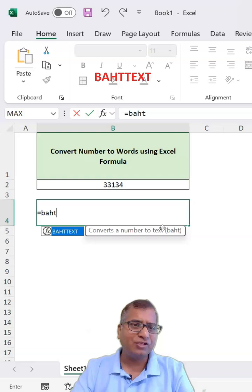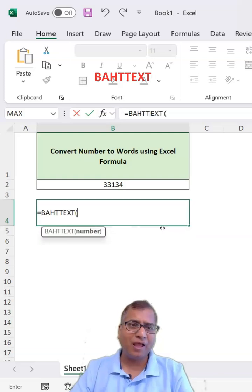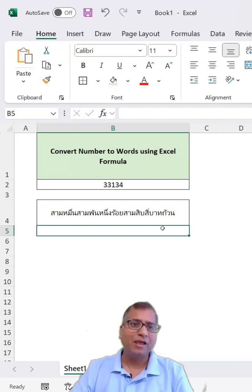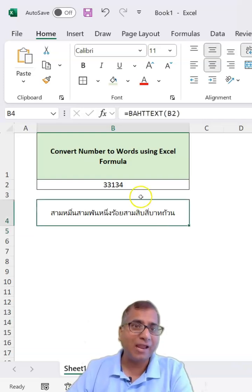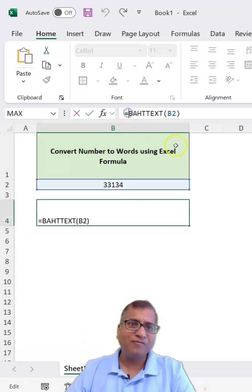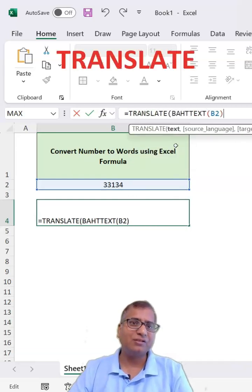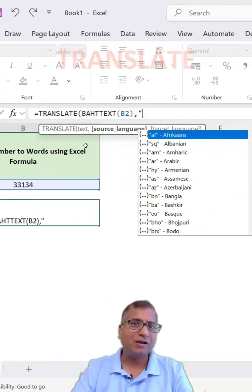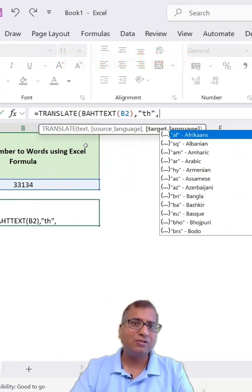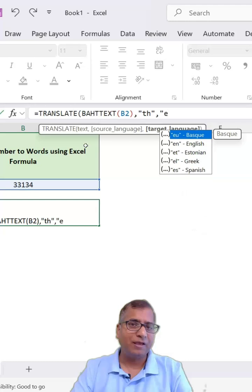The BAHTTEXT formula will select the number and convert it into Thai language. Now on top of this we'll be using the TRANSLATE function to translate this data from Thai to, let's say, English.